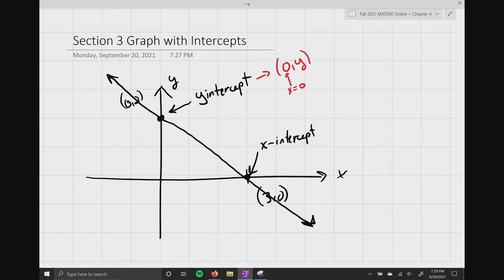At an x-intercept, well, this is going to be the ordered pair x comma 0. And at an x-intercept, you are always guaranteed that y equals 0. Now, I told you this would be huge for us, and I'm going to show you why.